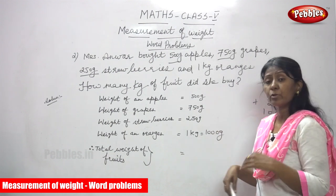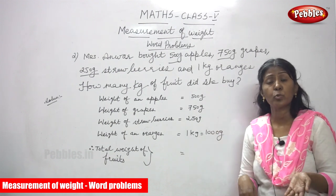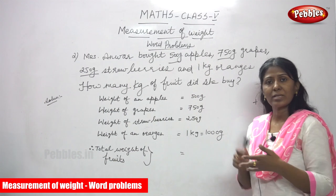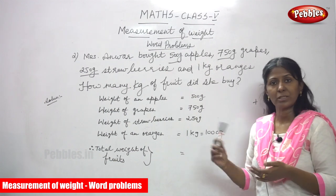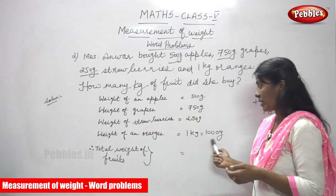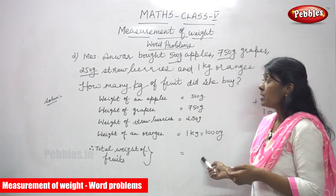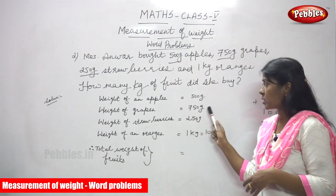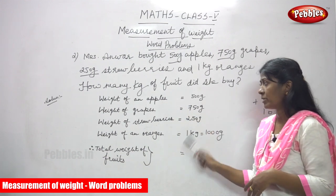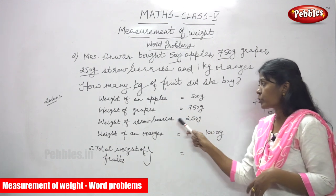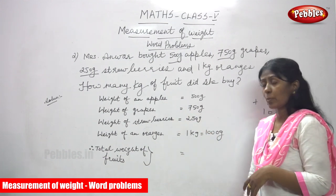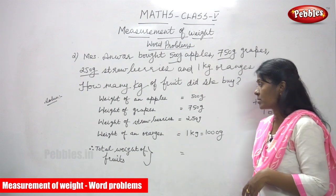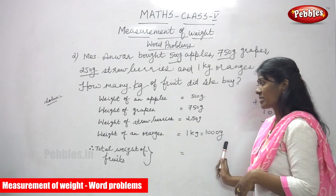So what we are going to do is convert everything into grams. 1 kilogram is equal to 1000 grams. So weight of apples is 500 grams, grapes is 750 grams, strawberries is 250 grams, and oranges is 1000 grams.